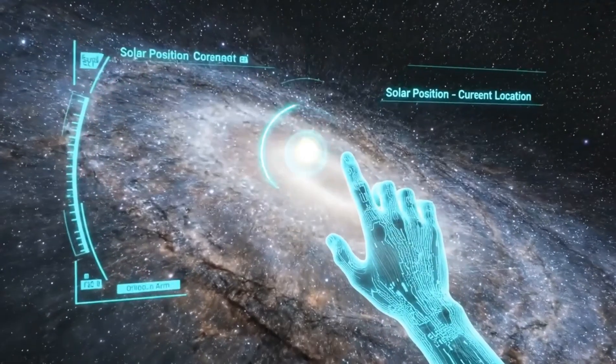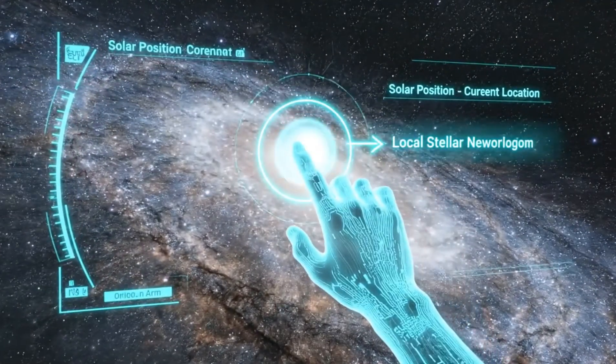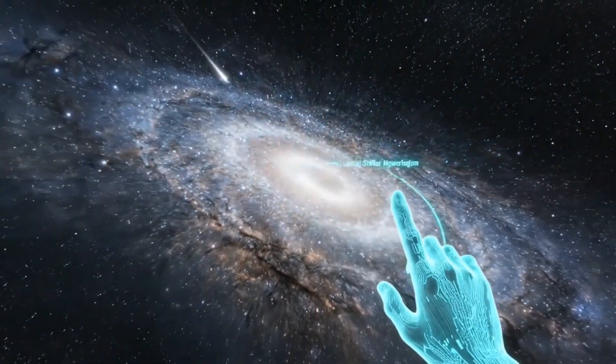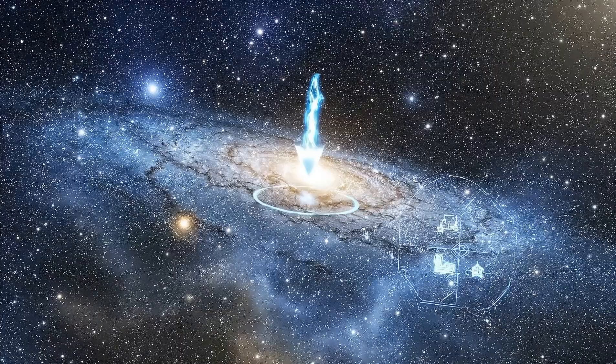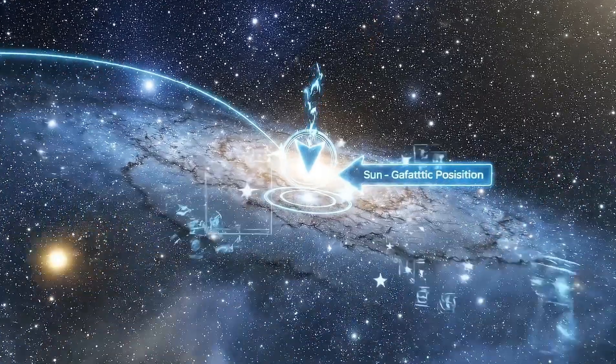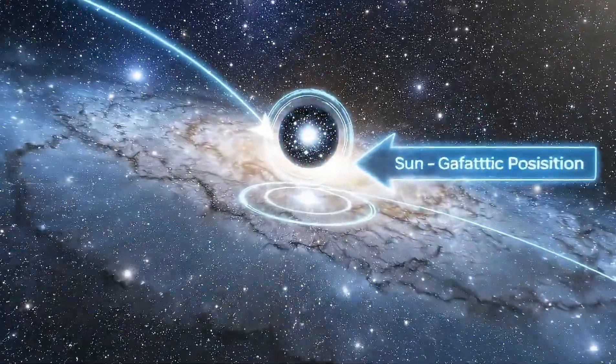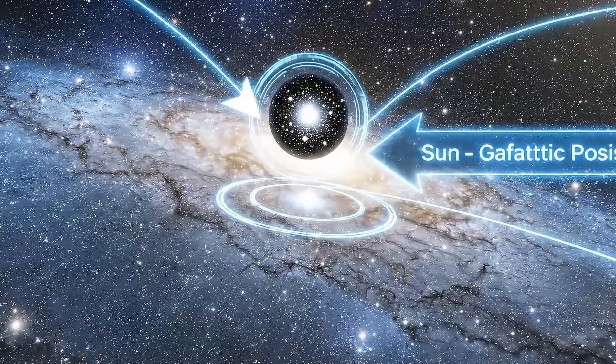System check. Confirmation target. Stellar neighborhood selected within the Milky Way's spiral arm. Here, on a quiet arm of the Milky Way, the sun claims its tiny place among billions.